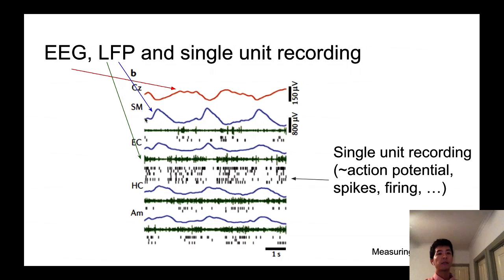And the blue is low-pass filtering. The blue ones isolate smooth, a smoothly changing kind of feature of the local field potential. And the green ones are the ones that are isolating the ones that are changing very quickly.